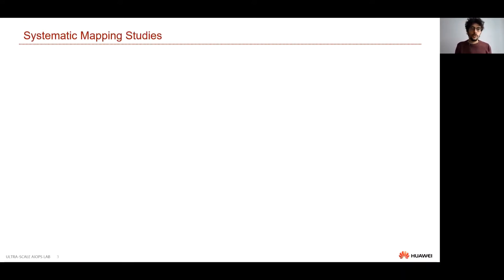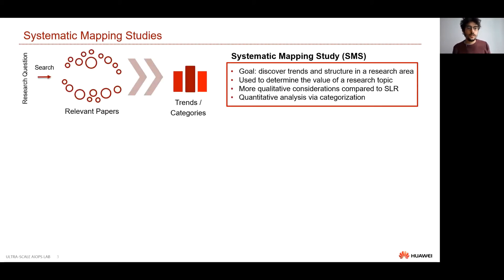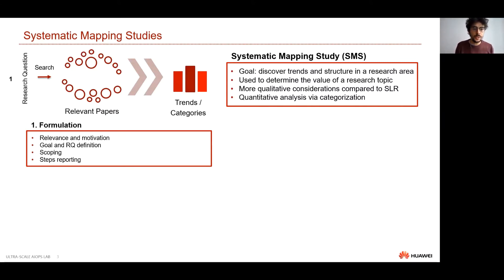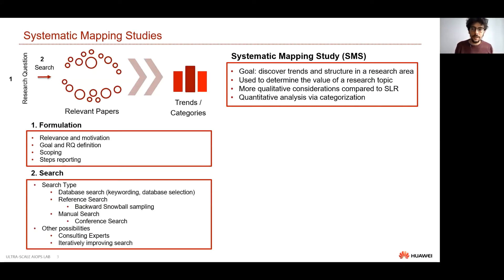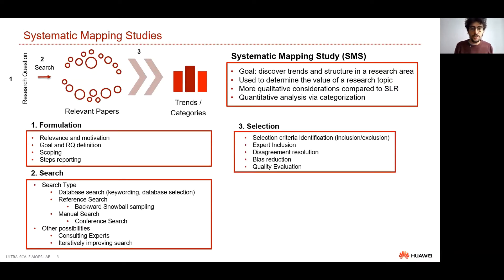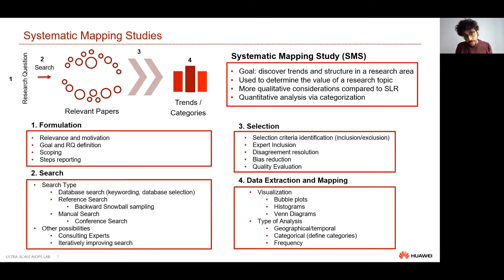In order to conduct this analysis we use a tool called the systematic mapping study — similar to a literature review but with a more quantitative focus — which is made up of four steps. The first is to formulate the research questions. Then we have the search, where we develop retrieval techniques for relevant material. Then selection, where we define criteria for relevance. And finally, data structure and mapping, where we develop categorization and visualization techniques to answer our research questions. This is what we will be doing with AIOps.